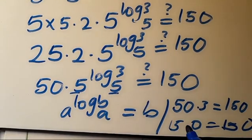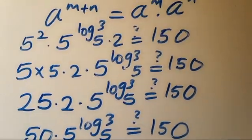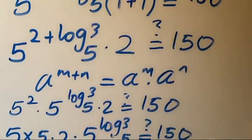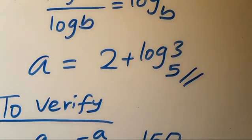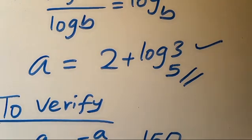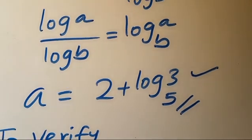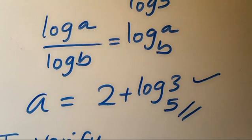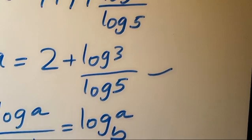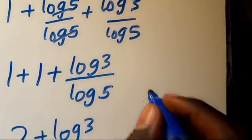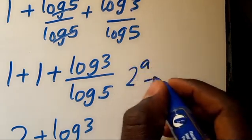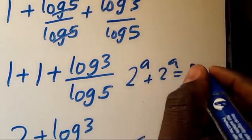Since the left-hand side equals the right-hand side, a equals 2 plus log base 5 of 3 satisfies the problem. If you are new here and find this video interesting, don't forget to share, like, comment, and subscribe for more math tutorial videos. Then try to solve this: when we have 2 to the power of a plus 2 to the power of a equals 150.